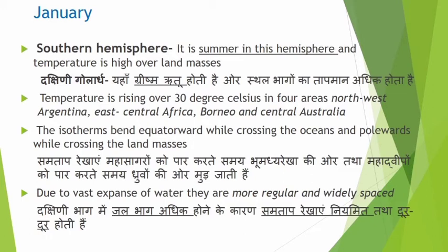Looking at the isotherms, they bend equatorward while crossing the oceans and poleward while crossing the land masses. The mountains also influence this pattern.